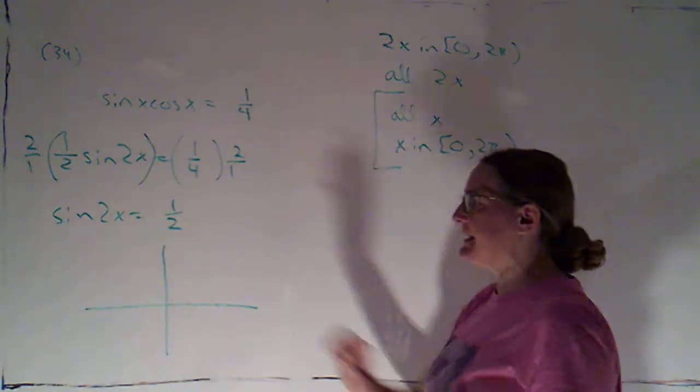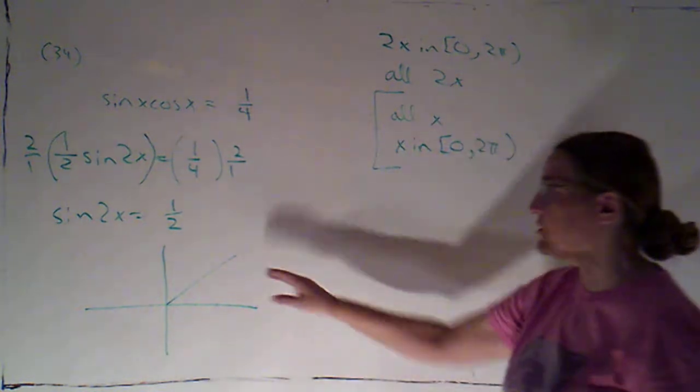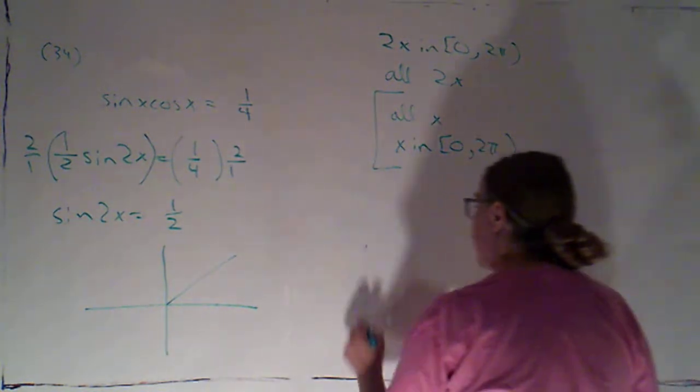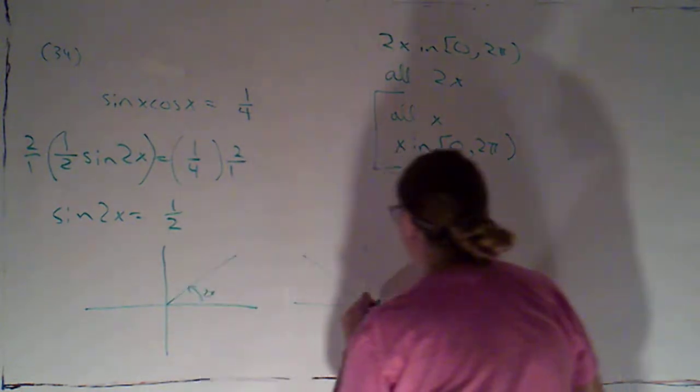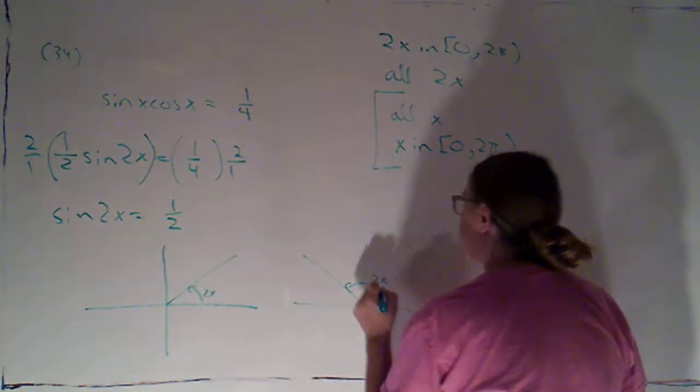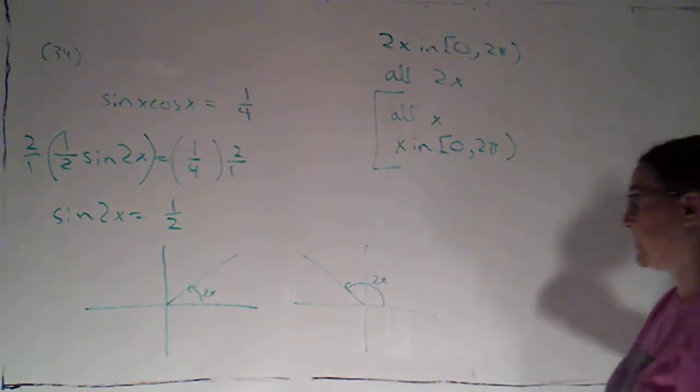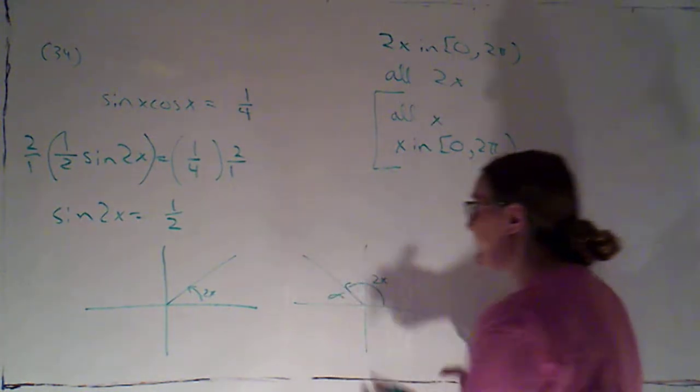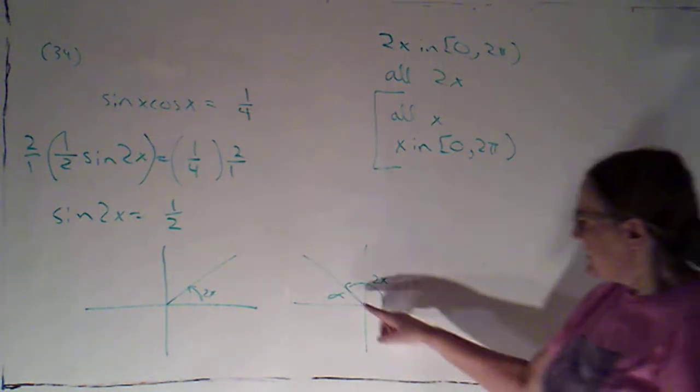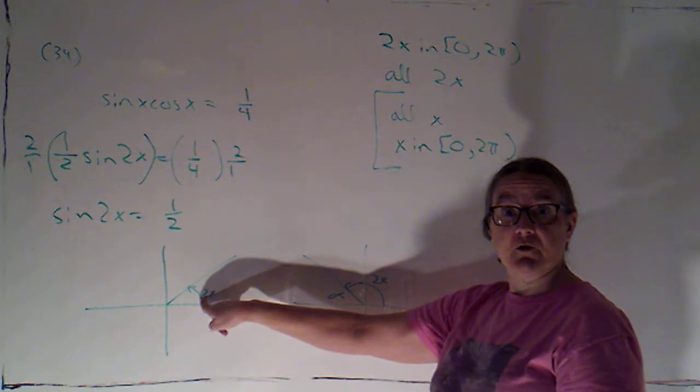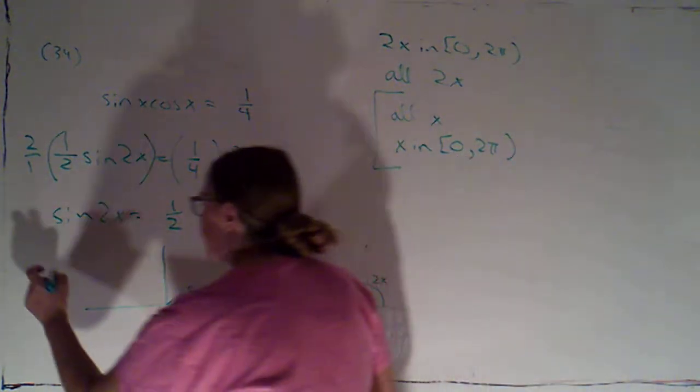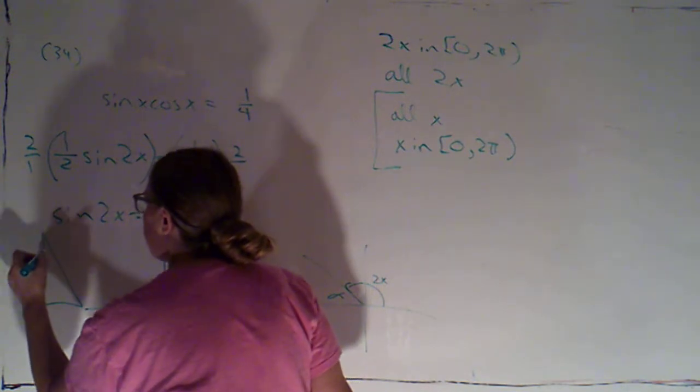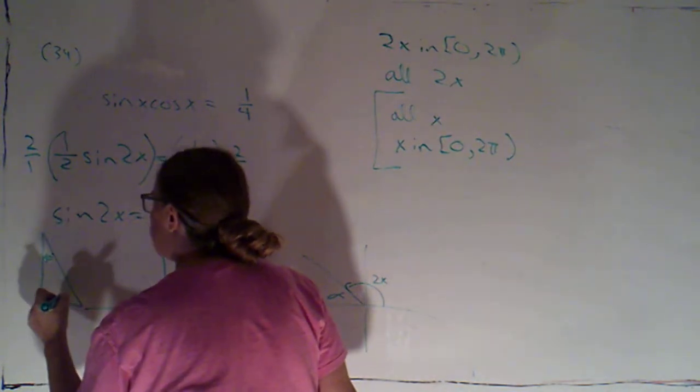And since its sine is positive, I know I'm going to have one answer in quadrant one and a second answer in quadrant two, because those are the two quadrants in which sine is positive. In quadrant two, I'll have a reference angle of alpha. That reference angle will just be my solution from quadrant one since this is an acute angle. So I'm looking for 2x to be the acute angle whose sine is one-half.